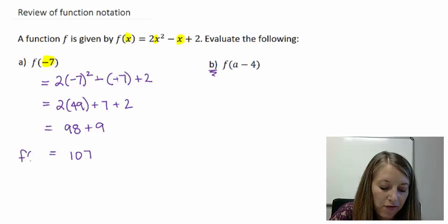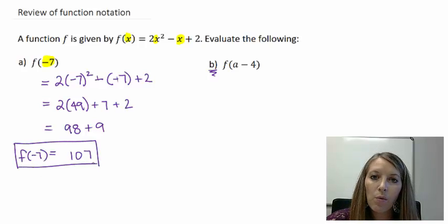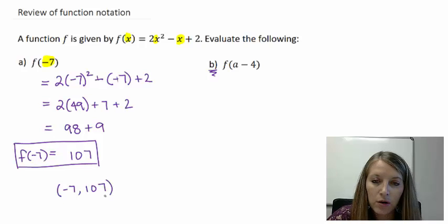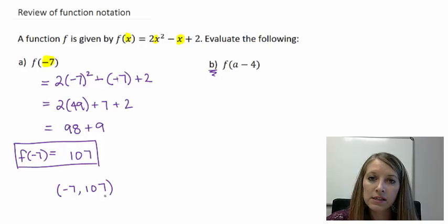And so my final answer here is 107. So my official answer is f of negative 7 gives me 107. If I choose to graph this, then that would also give me the ordered pair negative 7 and 107. So that's going to help me with the perspective here in my next example.